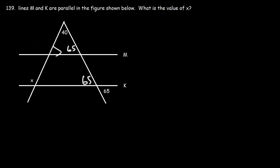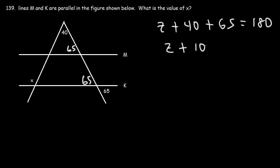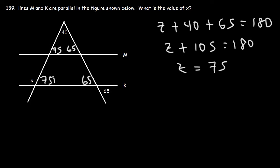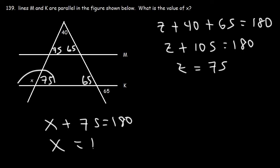Now we calculate angle Z inside the triangle: Z plus 40 plus 65 must add up to 180. Since 40 plus 65 is 105, Z equals 180 minus 105, which is 75. These two angles are corresponding angles, so that angle is also 75°. Since that angle and x form a linear pair, x equals 180 minus 75, which is 105.